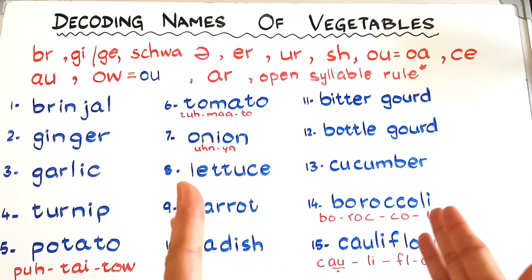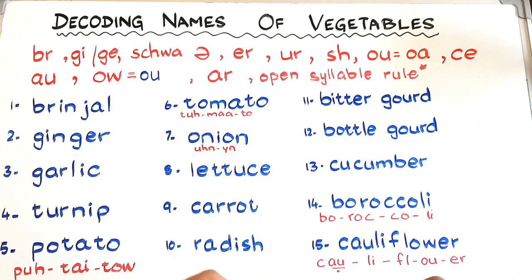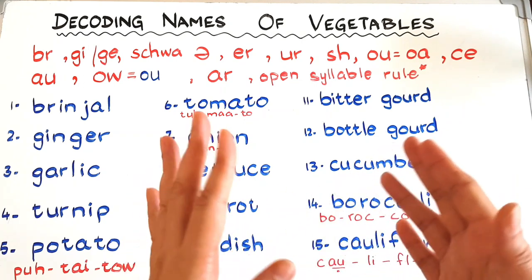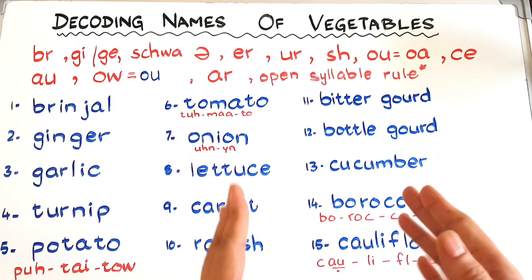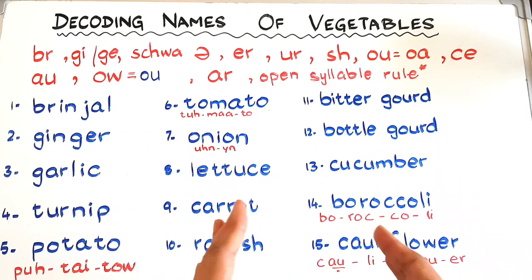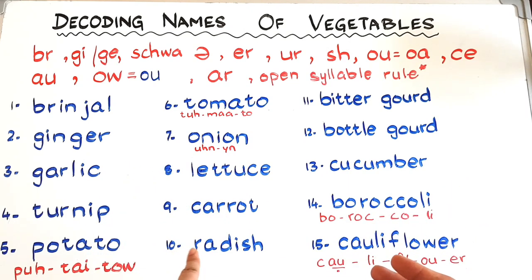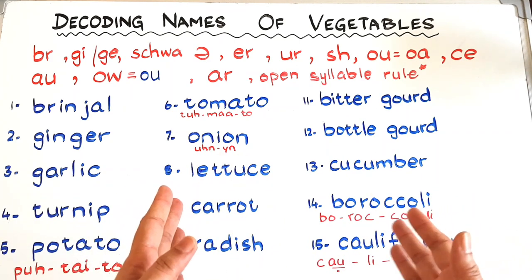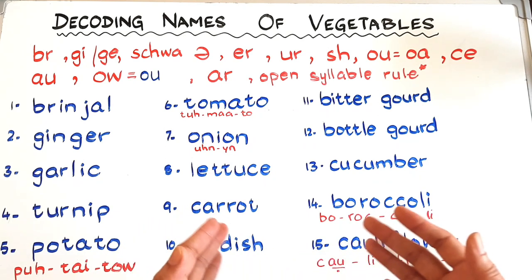That's it for today's video. I know this is something a bit tricky, but you are not supposed to give all the spellings in one day. Give three or five spellings. You can even make groups: the spellings that follow the open syllable rule keep in one group, and the completely tricky ones in another group — like carrot, where you say 'car' and 'rot'. There are some more vegetables I haven't covered, so this was just an example of how you can approach spellings.